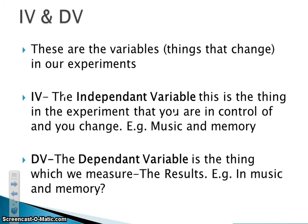IVs and DVs are variables — that's what the V stands for — meaning there's some sort of change going on with them. The independent variable is the thing that the experimenter is in control of; it's what you as a psychologist will be manipulating or altering to see results. So if we wanted to see the effects of music on memory, the IV would be music: one group listens to music, one group doesn't. That change we've made is the independent variable.